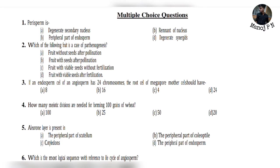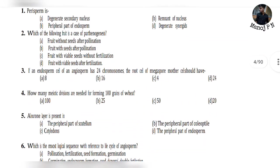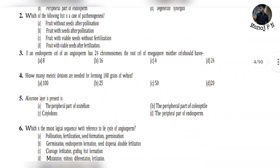Question number 2: Which of the following fruit is a case of Parthenogenesis? Parthenogenesis is the process of forming fruit without seeds after pollination. So it's option A — very simple answer.